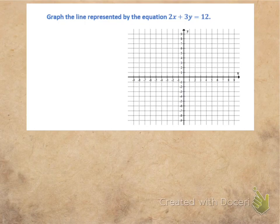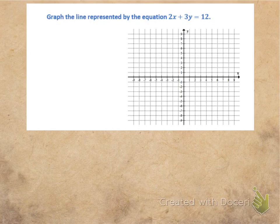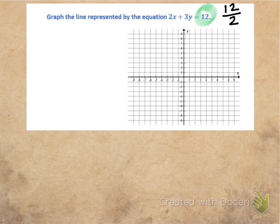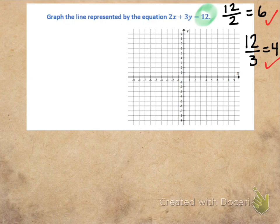Let's see how we put our plan into action. I want to graph the line represented by the equation 2x plus 3y equals 12. I see I have standard form, and I'm going to use the x and y intercepts to graph this line. You should use this method when you know your intercepts will be integers. Here's how you can tell: take your constant on the right side of the equation. If that constant is divisible by both coefficients — in this case 2 for x and 3 for y — then you'll have integers as your intercepts. Is 12 divisible by 2? Yes, that gives the integer 6. Is 12 divisible by 3? Yes, that gives the integer 4. So my intercepts will be integers.